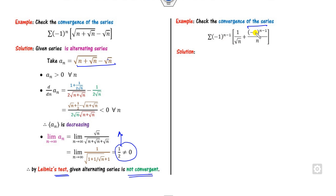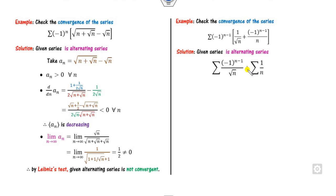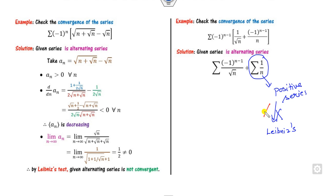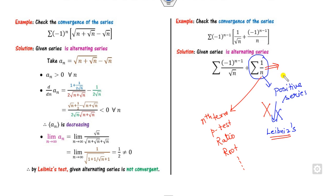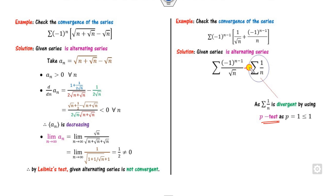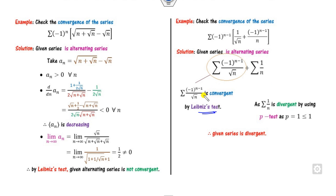Look at this example. There are two (-1) factors here, so first we open the summation. In this case one part becomes a positive series — not an alternating series — so you cannot apply the Leibniz test. For a positive series, you can apply the nth term test, P-test, ratio test, or root test. Clearly this series is divergent by the P-test. Whenever at least one part is divergent, the complete series is divergent. However, for the alternating part, you can apply the Leibniz test and see that it is convergent.